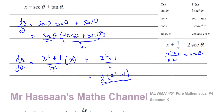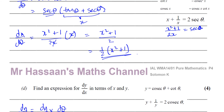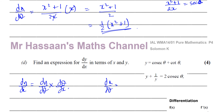Part D says: find an expression for dy/dx in terms of x and y. When finding dy/dx with parametric equations, we use the chain rule: dy/dx equals dy/dθ times dθ/dx. We already know dx/dθ equals (x² + 1)/2. That means dθ/dx equals 2/(x² + 1). So now I need to find dy/dθ.